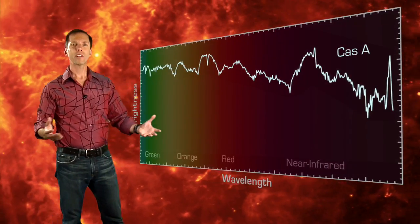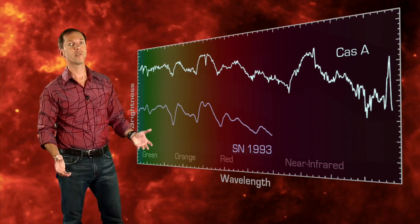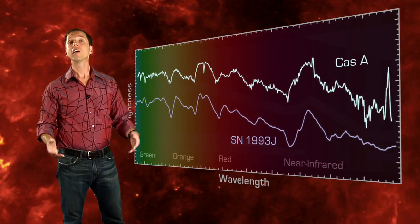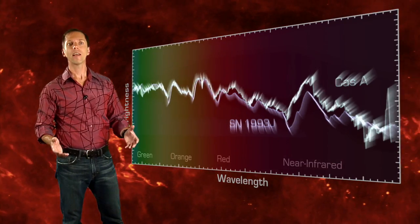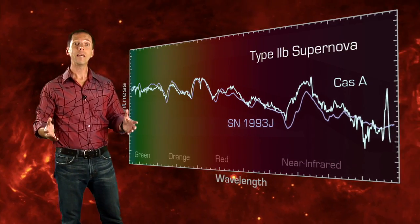The light echo has acted like an astronomical time machine, letting us study the original supernova using instruments that were beyond imagination in the 17th century. By matching its visible light spectral signature to a well-studied supernova in a nearby galaxy, Krause and his team have identified it as a so-called Type IIb supernova.